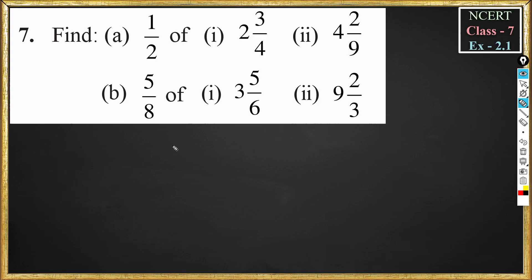Class 7 maths, exercise 2.1, question number 7. Find, problem number A: 1 by 2 of 2 and 3 by 4. So given: 1 by 2 of 2, 3 by 4.